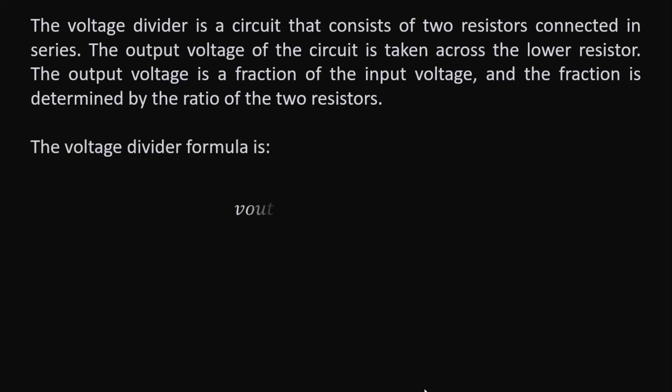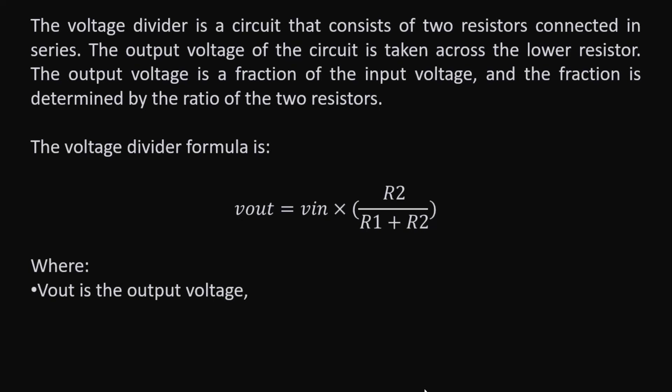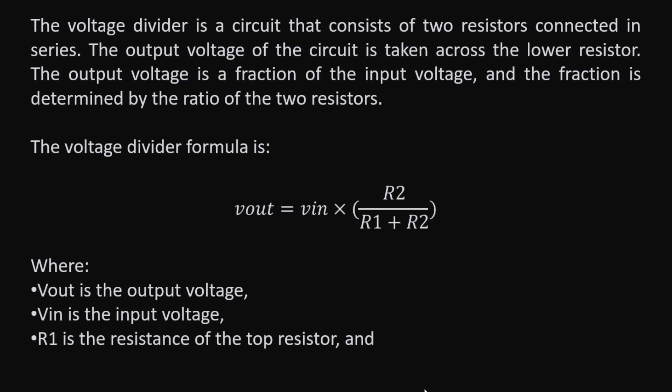The voltage divider formula is as follows: Vout equals Vin multiplied by the second resistor — that is the lower resistor — divided by the addition of the two resistors. Where Vout is the output voltage, Vin is the input voltage, R1 is the resistance of the top resistor, and R2 is the resistance of the bottom resistor.